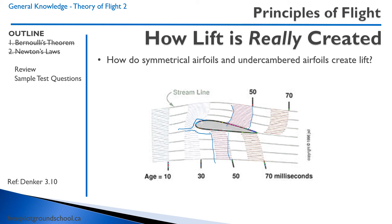But it doesn't need to meet the bottom parcel of air at the same time. So if this wing were still, what would end up happening is you'd have the air going around here — notice how it's going faster on top than the bottom — and it'll go around the bottom and circulate. This is actually called circulation.